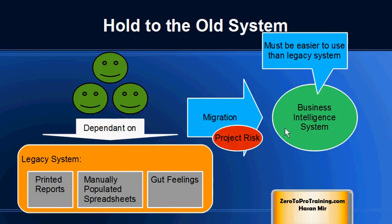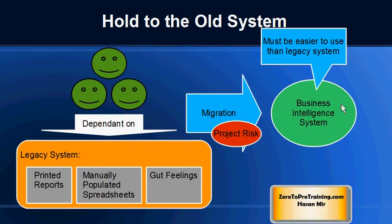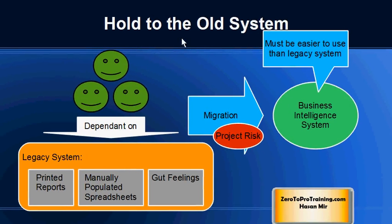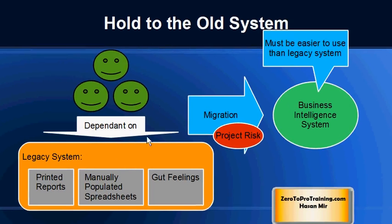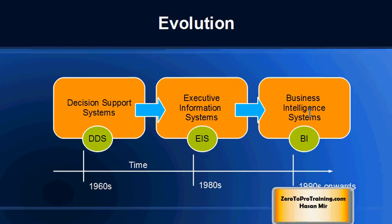Business intelligence projects are slightly different from implementing any other application because you are asking users to change the way they make decisions. Users are very dependent on legacy systems and old ways of making decisions, so the new system has to be easier to use than the old one — otherwise there is a risk of failure. This resistance is sometimes called 'hold to the old system' and is a little more pronounced in BI projects.